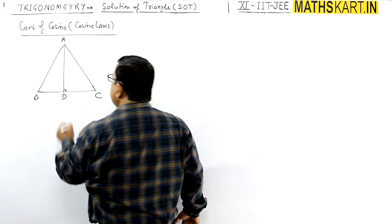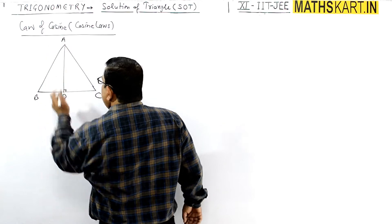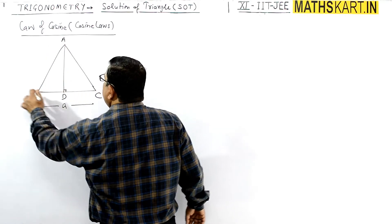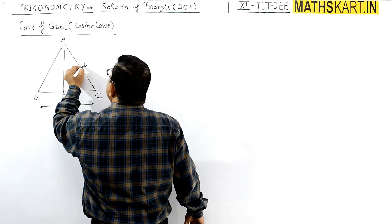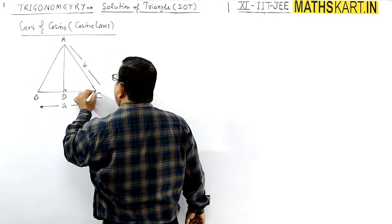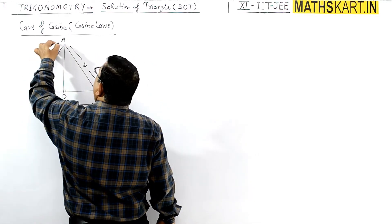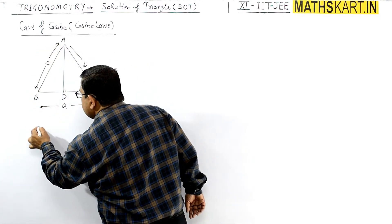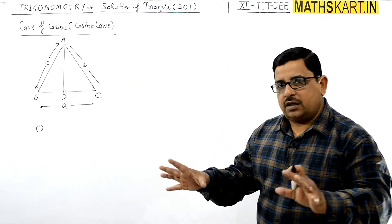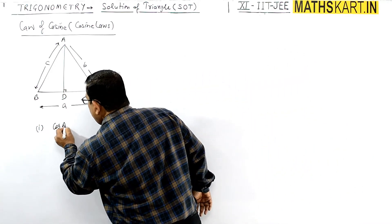In the triangle, this is the perpendicular. Side 'a' is opposite vertex A, side small 'b' is opposite vertex C, and side small 'c' is opposite its respective vertex. So we have three formulas for the cosine law — cos A, cos B, and cos C.